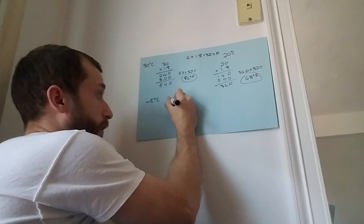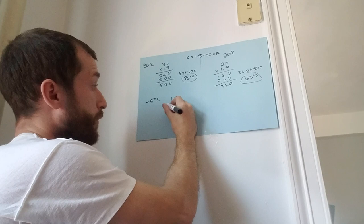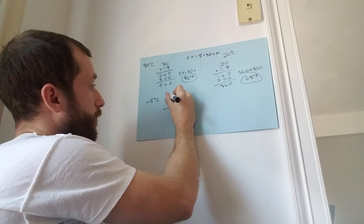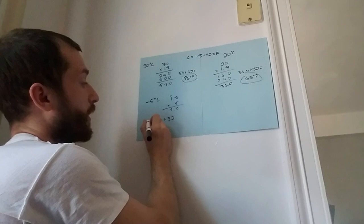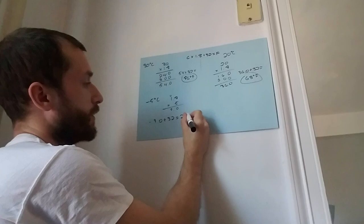So let's do the same thing: 1.8 times 5. Remember, we're dealing with a negative number now. 1.8 times 5 is gonna give you negative 9.0. Negative 9.0 plus 32 is gonna give you 23 degrees Fahrenheit. That's quite cold.